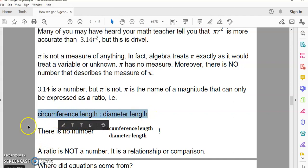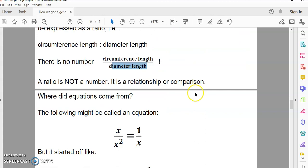By the way, a ratio is not a number. It's a relationship or a comparison, as you see here. That's not a number. To be a number, you have to have a magnitude that measures both the consequent and the antecedent. The antecedent and the consequent. There is no magnitude that measures both. Because if there were, you'd be able to write it as a number like this, circumference length over diameter length.